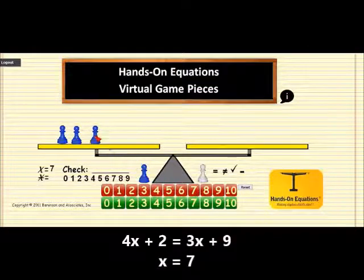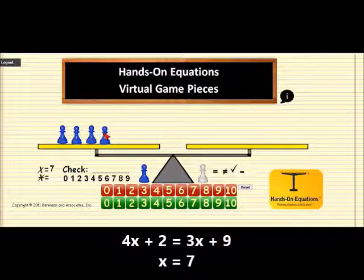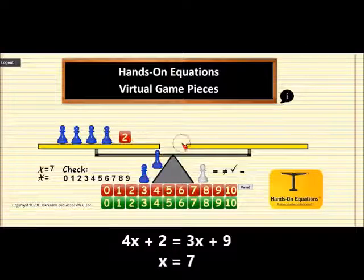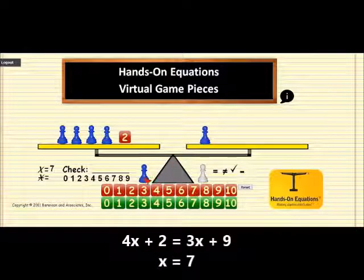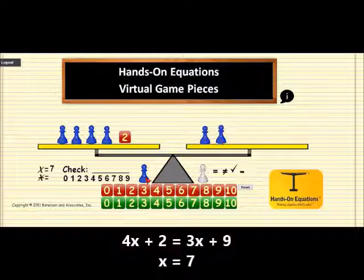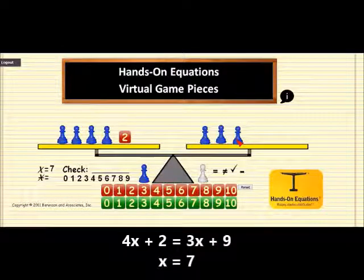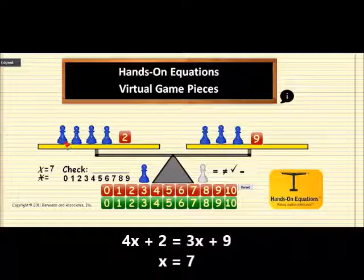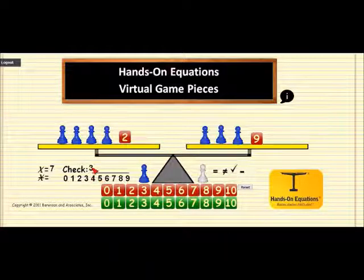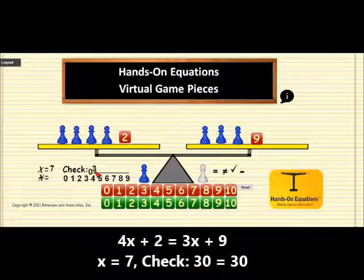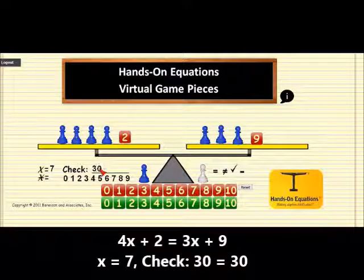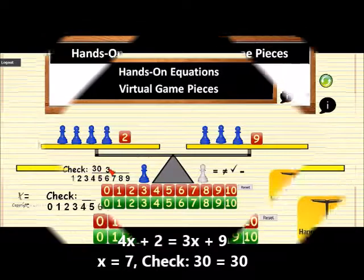And then we are in a position to carry out the check. So 4x plus 2 is equal to 3x plus 9. And now if you add the pieces, you get 30 on this side, and on this side you get 30. So the value for the check is 30 is equal to 30.